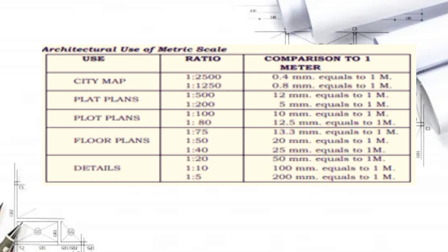For 1 to 80, 12.5 mm equals 1 meter. In floor plans, we use the ratios of 1 to 75, 1 to 50, and 1 to 40. For 1 to 75, 13.3 mm equals 1 meter. For 1 to 50, 20 mm equals 1 meter. And for 1 to 40, 25 mm equals 1 meter.